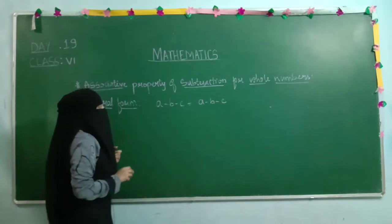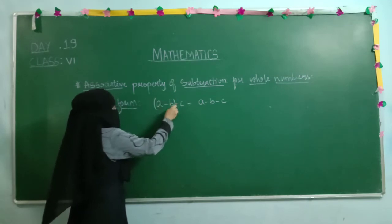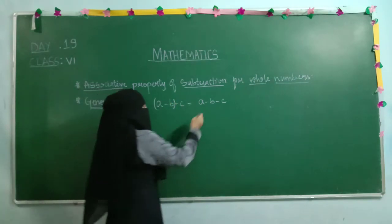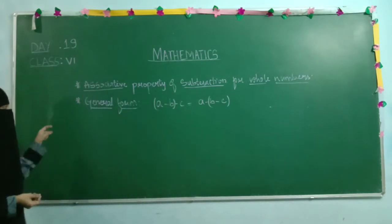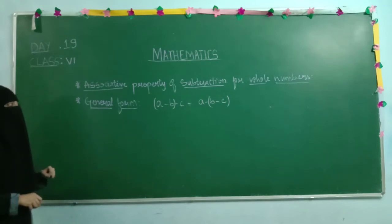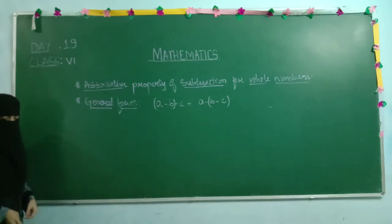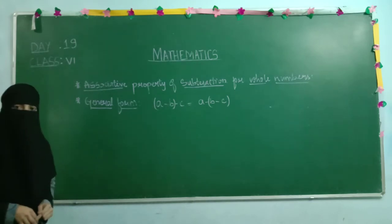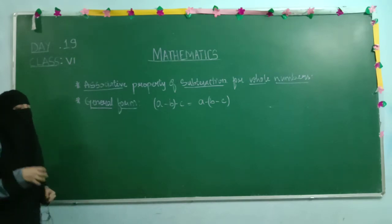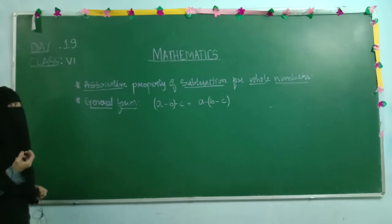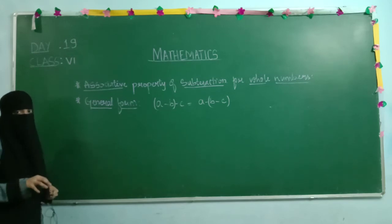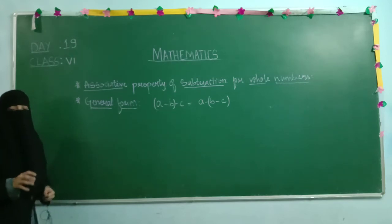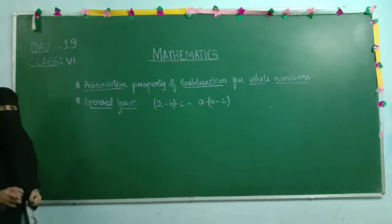The difference is we give the bracket to the first two terms on the left hand side, and we give the bracket to the last two terms on the right hand side. That is your general form. Now there are two types of questions: they may give their own whole numbers and ask you to verify, or they may ask you to take your own whole numbers and verify.